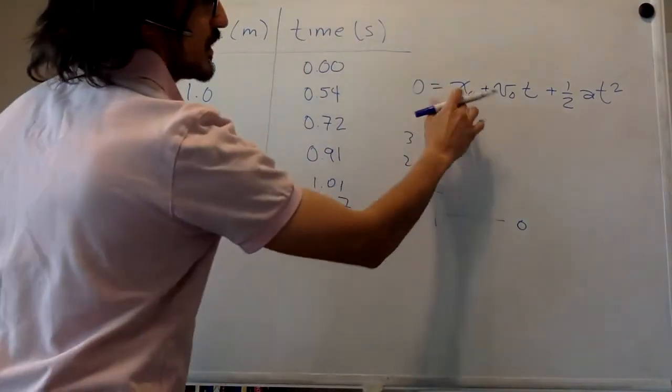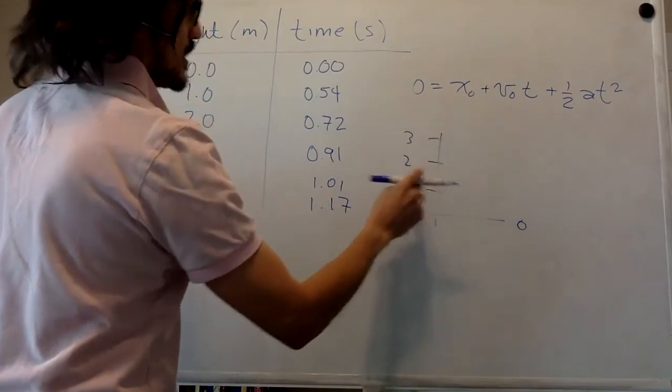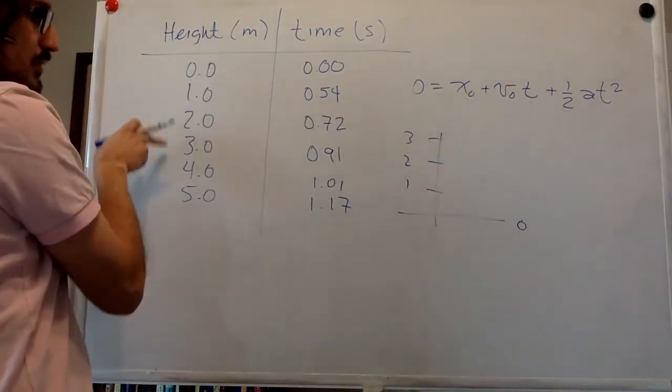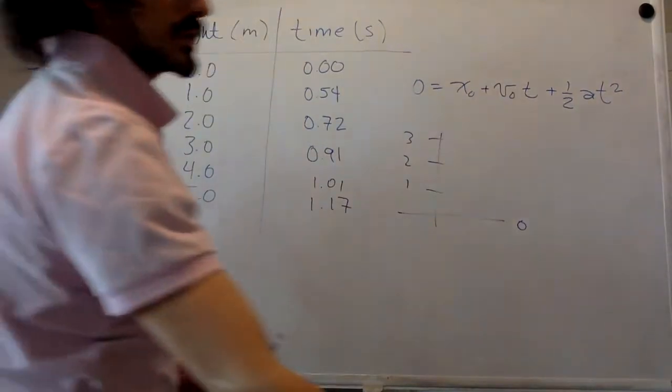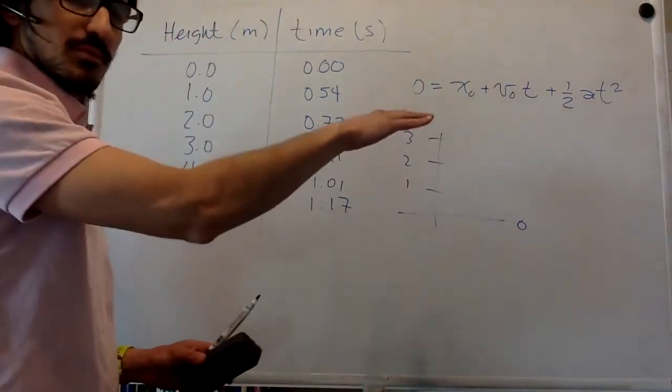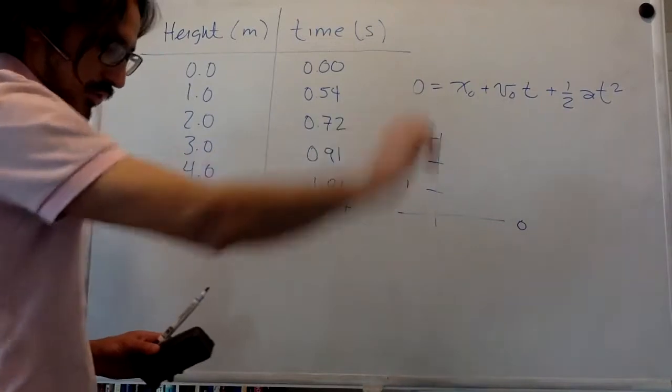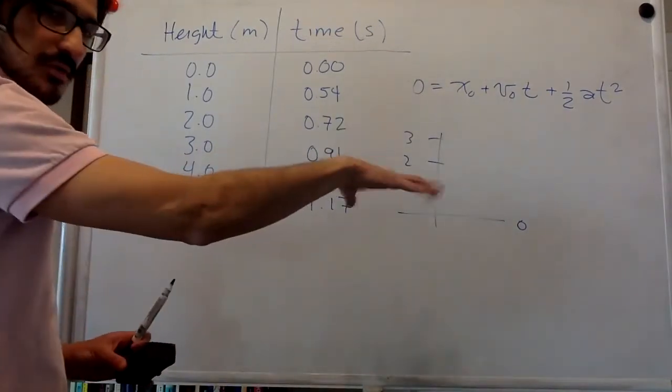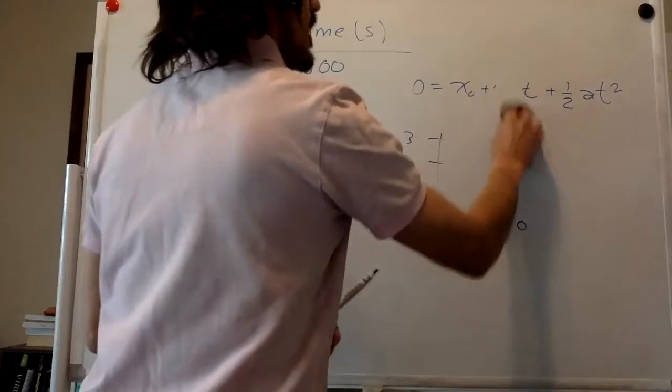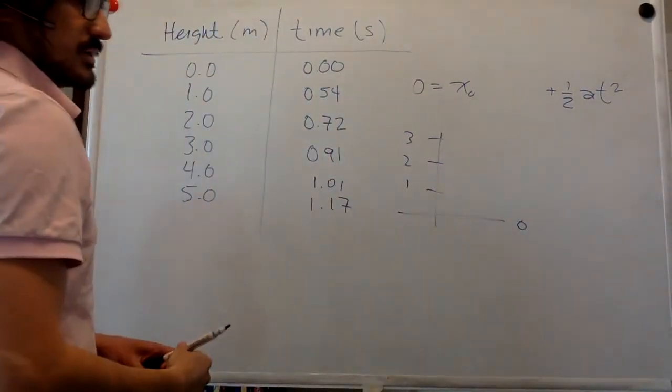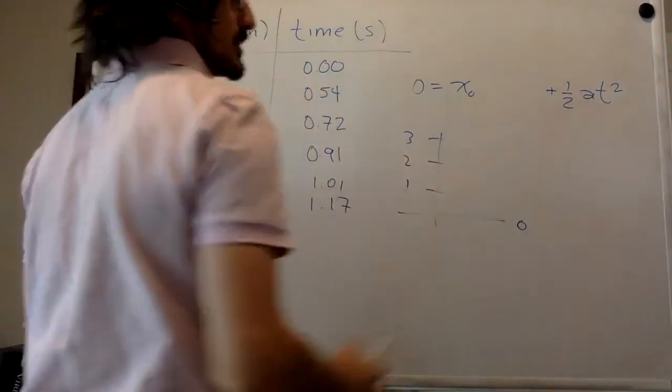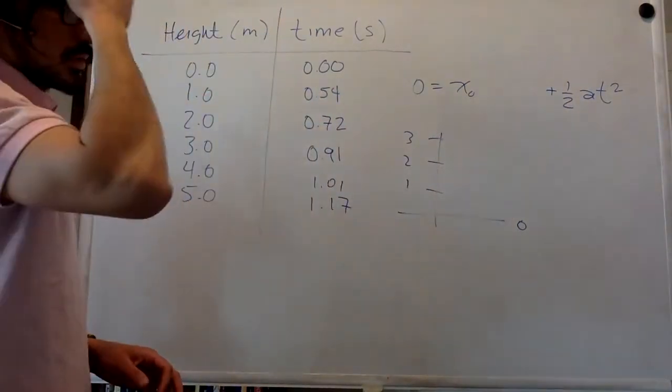So X nil is this one. One, two, three, four, five. Initial velocity is zero in every case. So you're not pushing it towards the ground. You're just letting it go without any initial velocity. And this acceleration is what we're looking for.